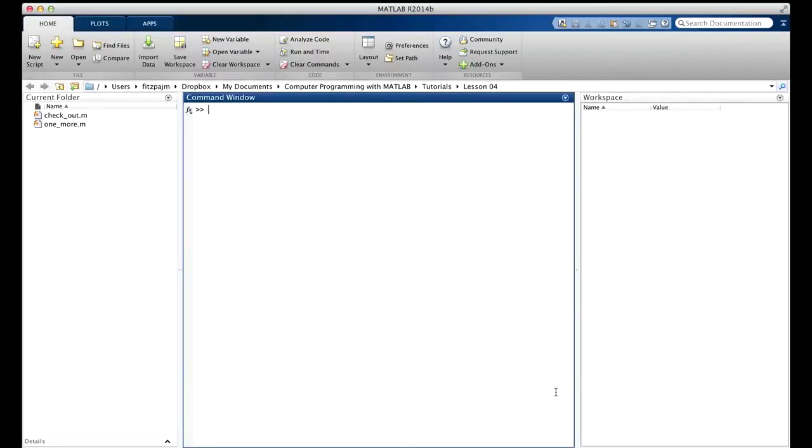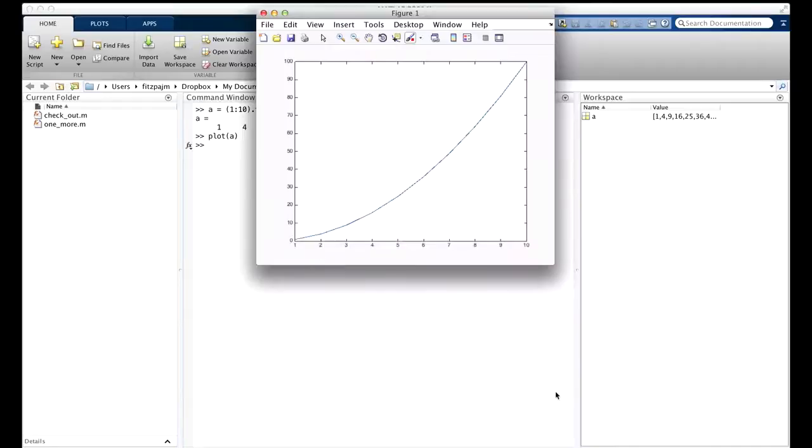You may remember we saw it in lesson one. We're going to go over it again with a bit more detail this time. The easiest way to use the plot function is simply to pass a vector to it. So let's get a vector. This is just a list of the squares, the numbers from 1 to 10, and plotting it is done like that. There we go, there's our plot.